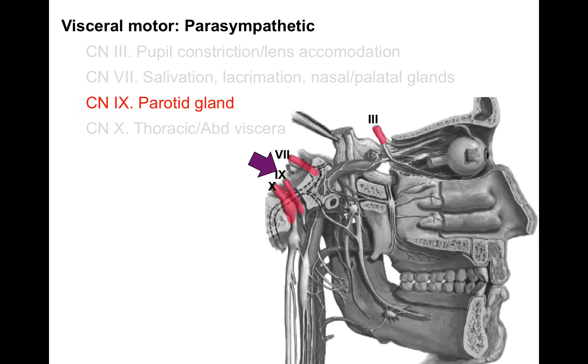Cranial nerve 9 supplies just your parotid gland, making saliva — again, rest and digest.